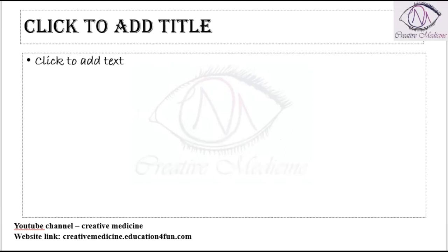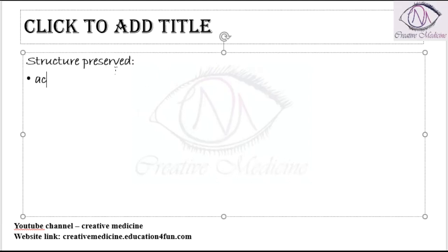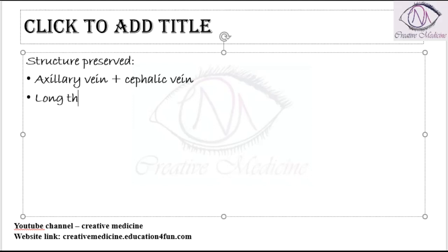What are preserved in Halstead Radical Mastectomy? The structures preserved are the axillary vein and cephalic vein. We also preserve the long thoracic nerve of Bell, which is the nerve to serratus anterior.